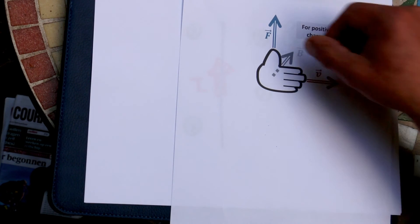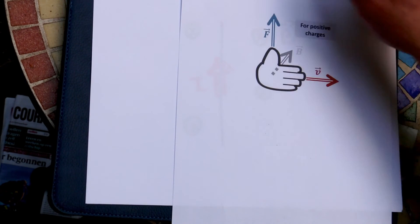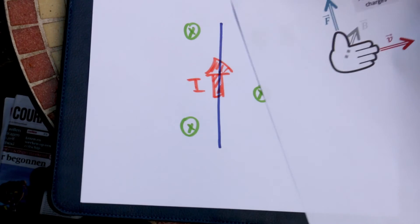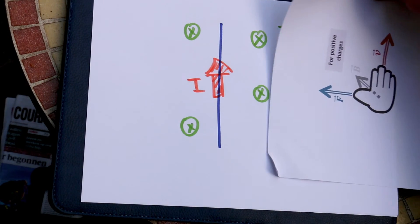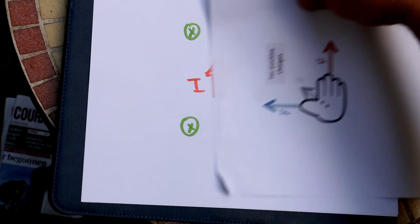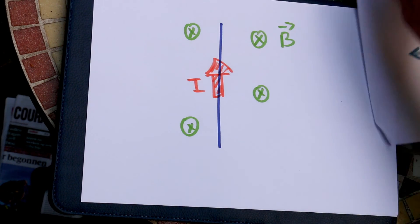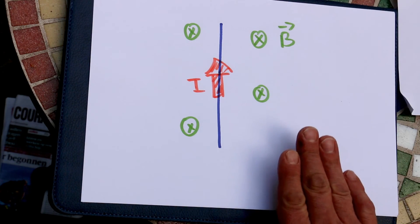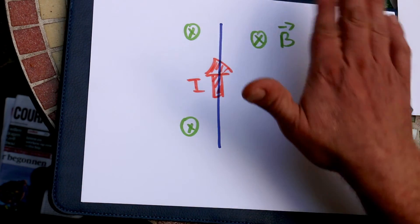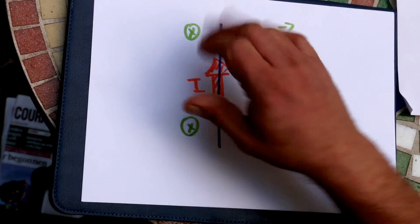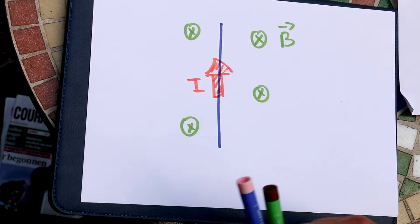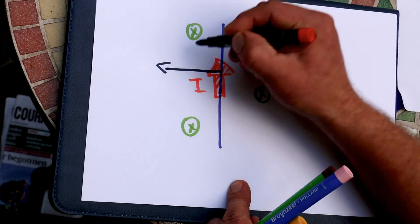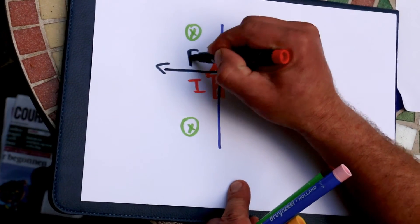The palm will give you the field, and F will be the force. In that case, the charges are moving like this, the field is downwards. Therefore, the force felt by the wire will be to the left.